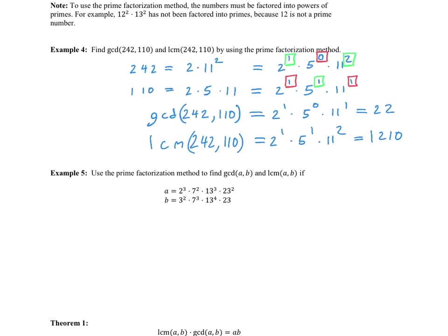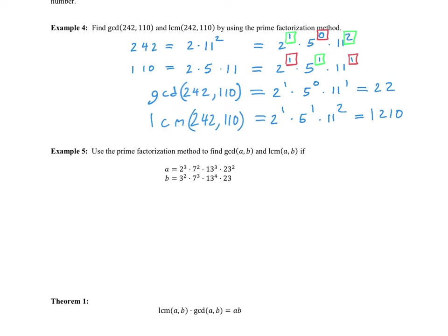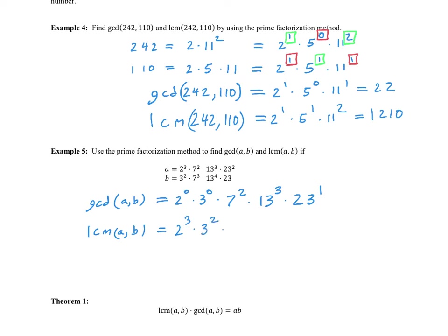Let's try once more with numbers A and B already factorized. The only tricky part is that some prime bases aren't lined up. GCD(A, B) uses the lowest powers: 2⁰, 3⁰, 7², 13³, and 23¹. LCM(A, B) uses the highest powers: 2³, 3², 7³, 13⁴, and 23².